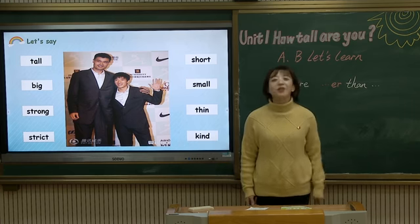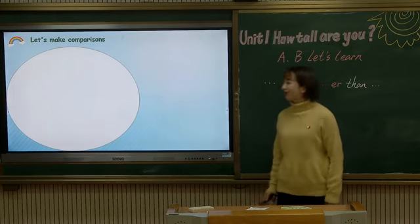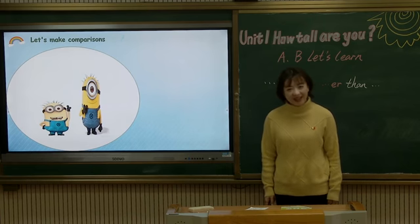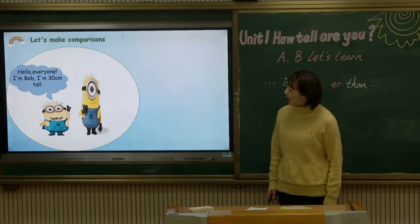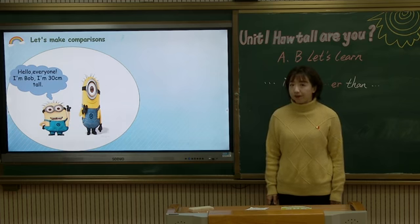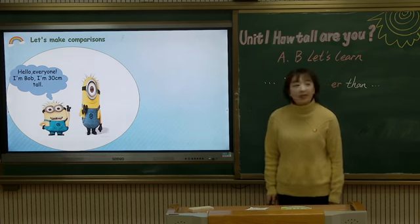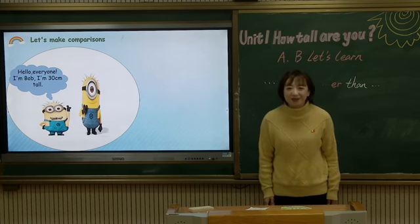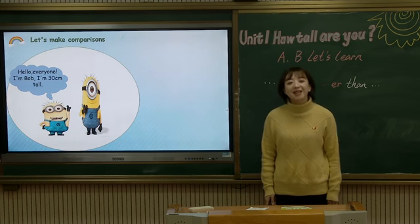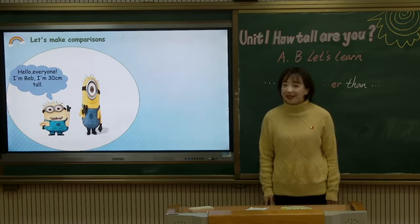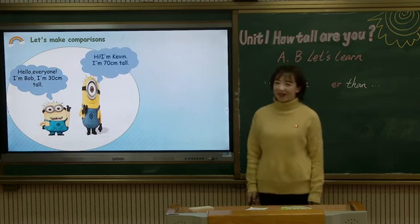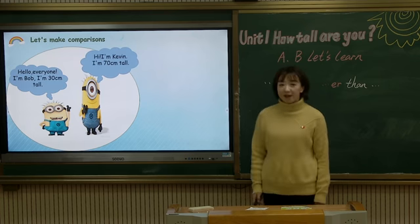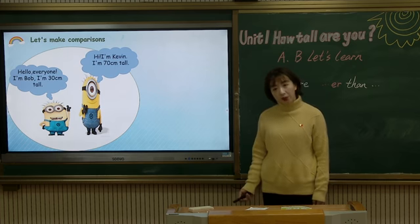Okay, let me show you examples. Here come two little people. Let's see. Hello everyone, I'm Bob. I'm 30 centimeters tall. 大家注意看，这里有一个新的单位出现了：centimeters. Follow me: centimeters. 30cm. And here's another one: Hi, I'm Kevin. I'm 70cm tall. So you can see: Bob is short, Kevin is tall.